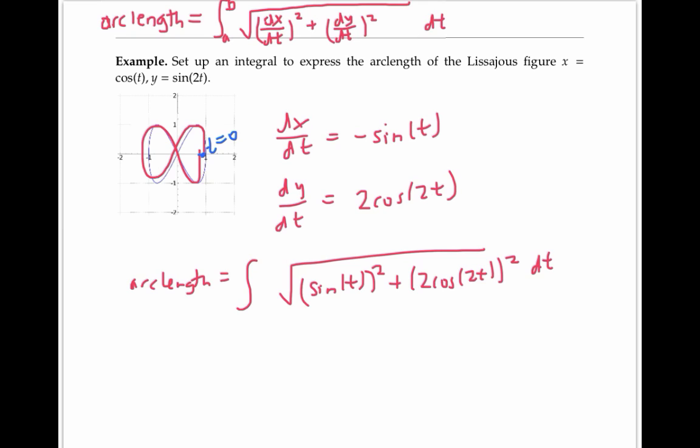The next time that we get to this point with an x coordinate of one, we need x equal cosine t to equal one. So the next time will be when t equals two pi. Therefore, our bounds of integration are going to be from zero to two pi.